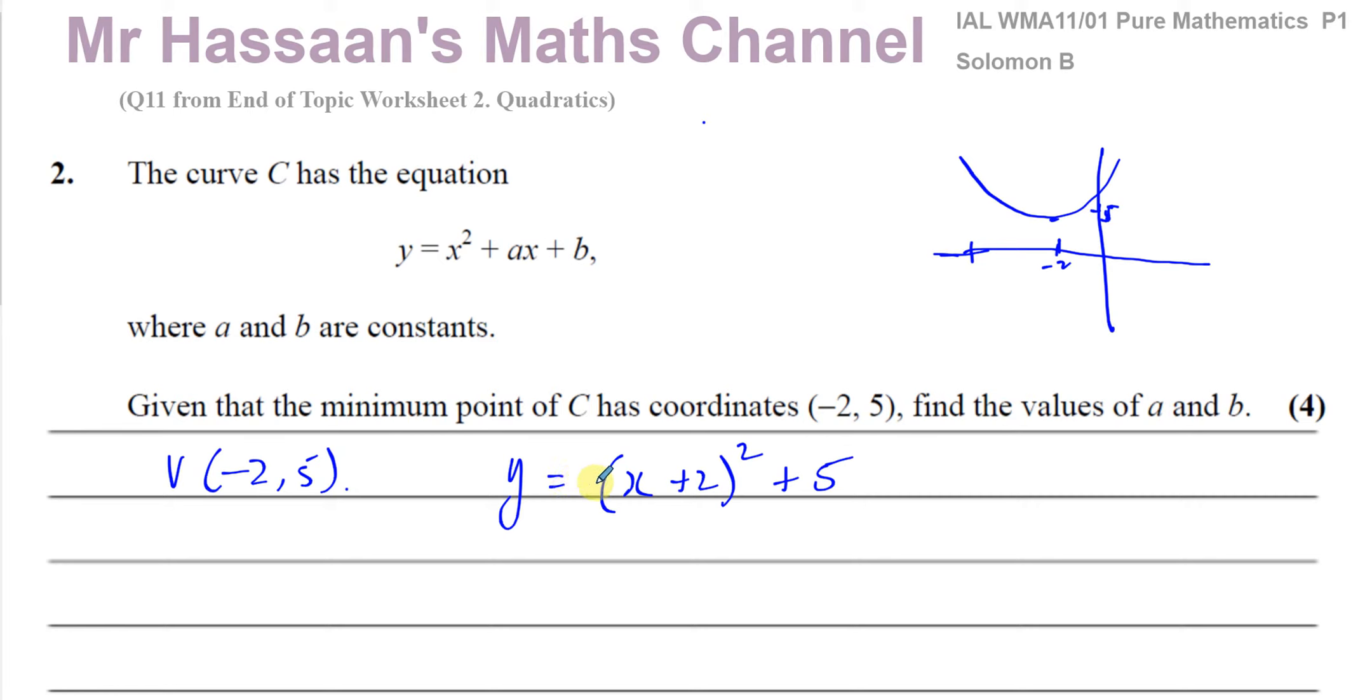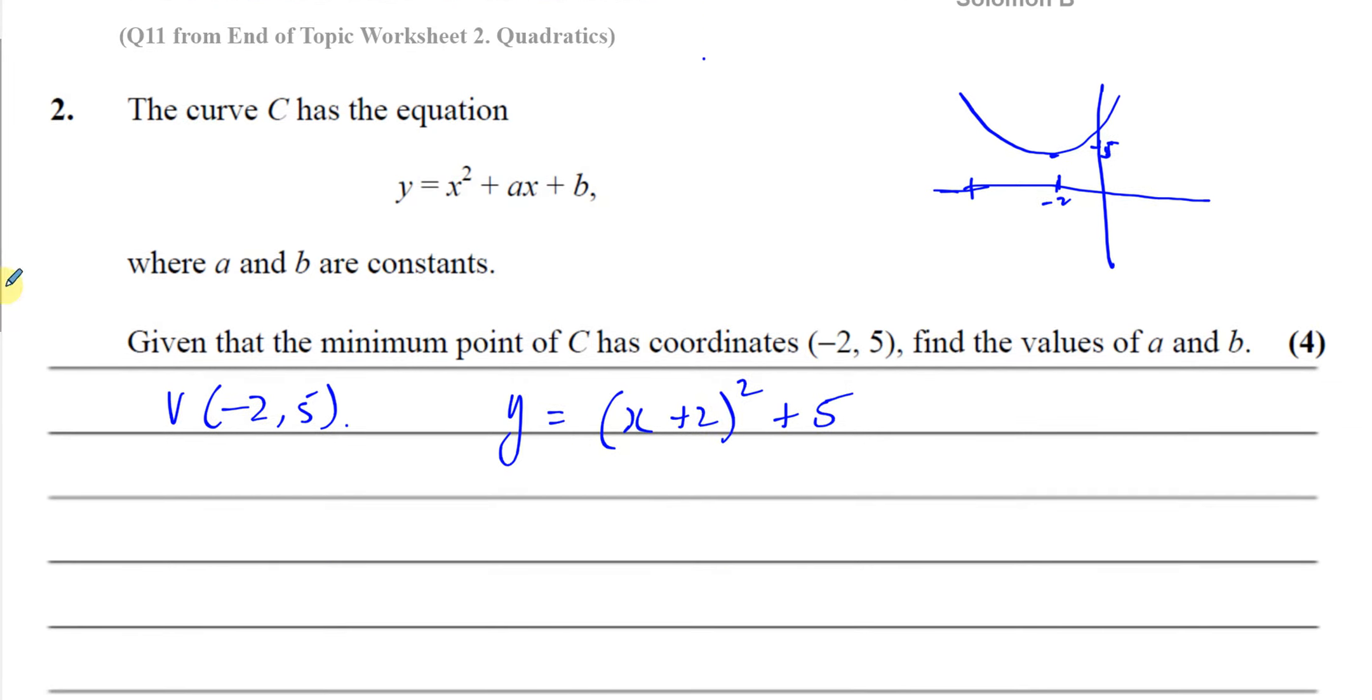In this particular question, we don't have to worry about any constant that might be here, because we know that the constant is equal to 1, because it doesn't say ax squared, there's a 1 there. So there must be a 1 here as well, because when you expand the bracket, you end up with 1x squared. We can just simply expand this and we'll get our answer.